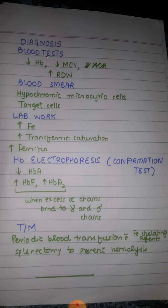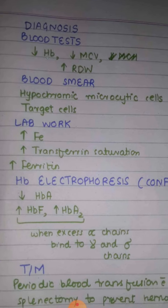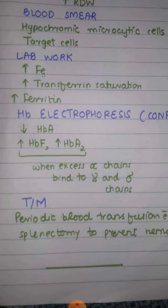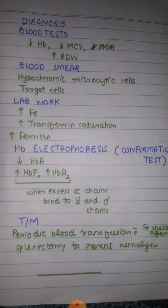Diagnosis involves blood tests showing decreased hemoglobin, decreased mean corpuscular volume (microcytic cells), and increased red cell distribution width. Blood smear shows hypochromic microcytic cells and target cells. There is iron overload with increased serum iron, increased transferrin saturation, and increased ferritin. Hemoglobin electrophoresis confirms the diagnosis: decreased hemoglobin A, with increased hemoglobin F and hemoglobin A2, because excess alpha chains bind with gamma and delta globin chains respectively.